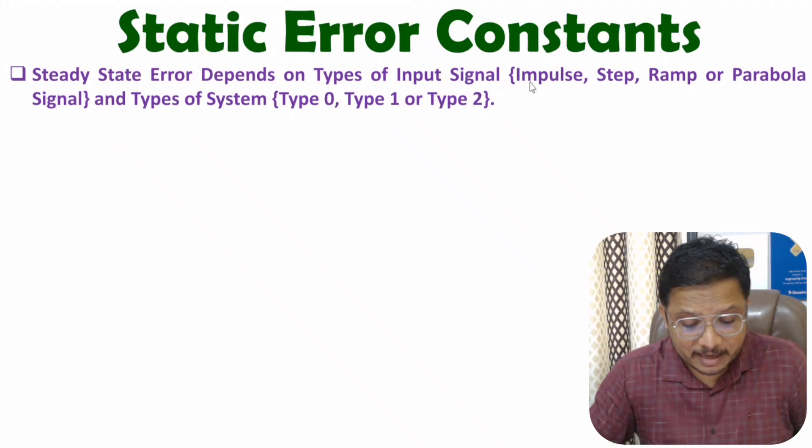The input signal can be impulse signal, step signal, ramp signal, or parabola signal. Steady state error also depends on types of system. That system type could be type 0, type 1, or type 2.